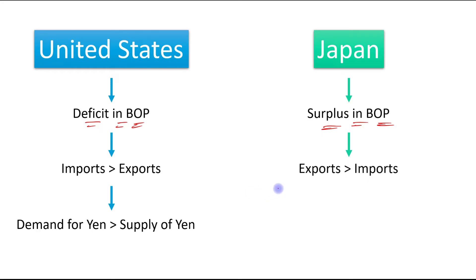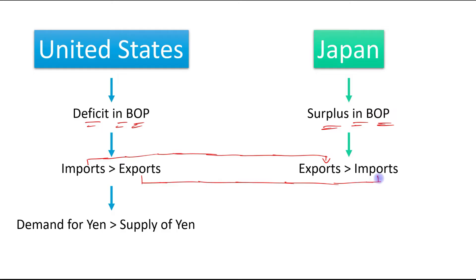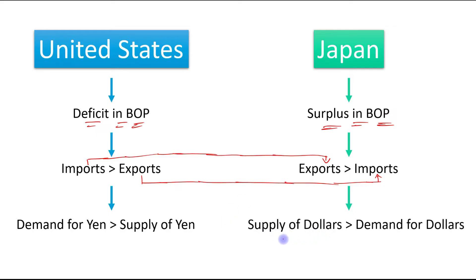Japan's surplus means its exports are greater than imports — exports to the United States are greater than imports from the United States. When Japan's exports are greater than its imports, the supply of foreign currency, that is the supply of dollars, is greater than the demand for dollars. Exports are directly linked to the supply of foreign currency, and imports are directly linked to the demand for foreign currency.